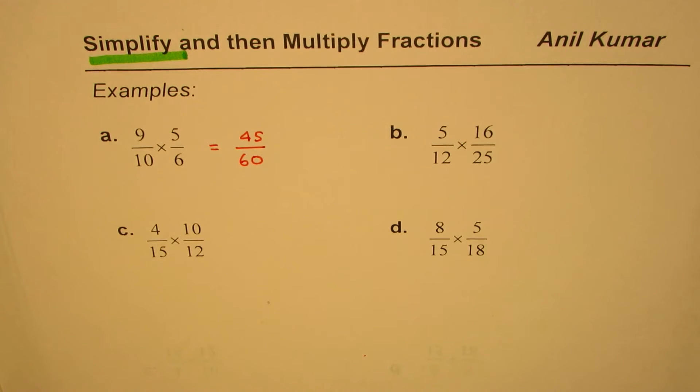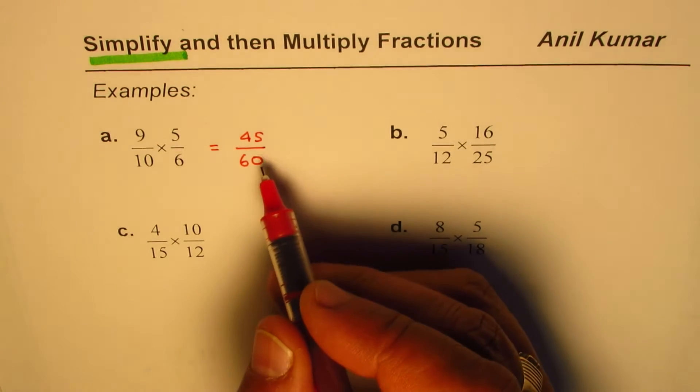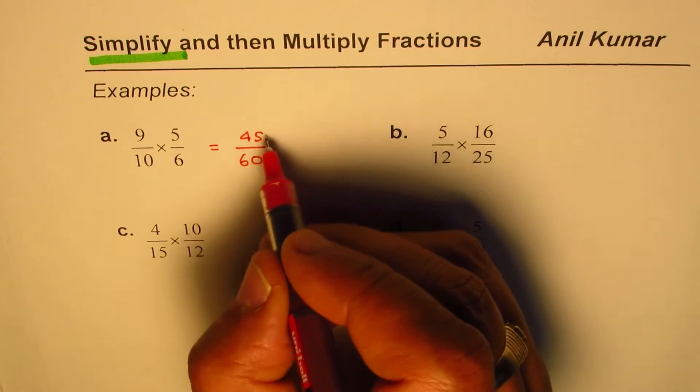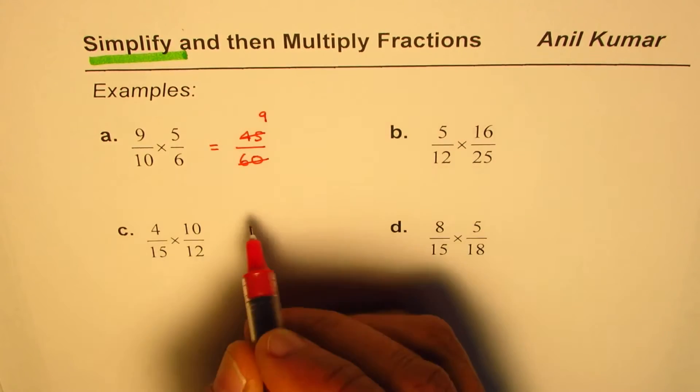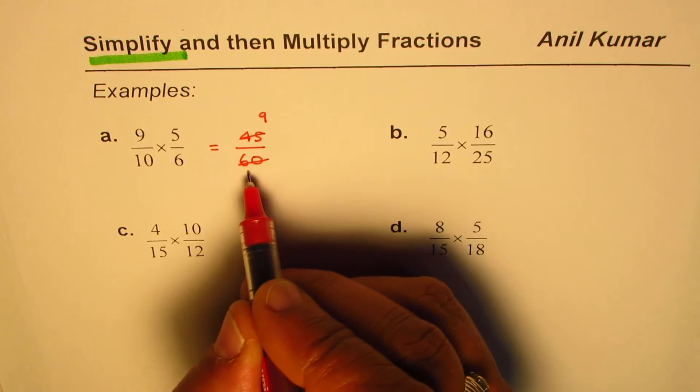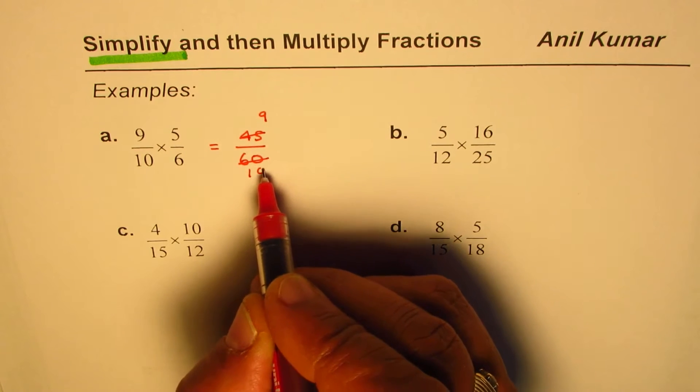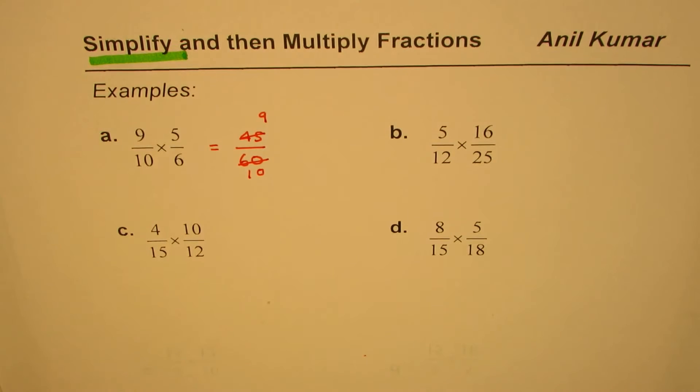Now once you get 45 over 60, you need to simplify. You can divide both by 5. Dividing 45 by 5 gives 9, and dividing 60 by 5 gives... So 9 over 10 becomes the answer for this particular question.